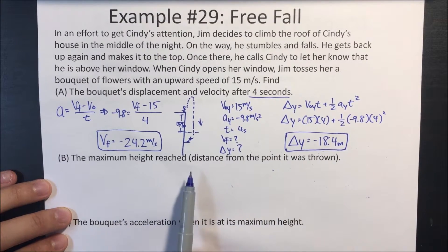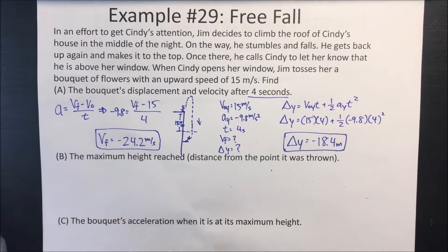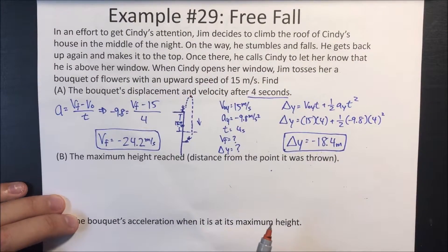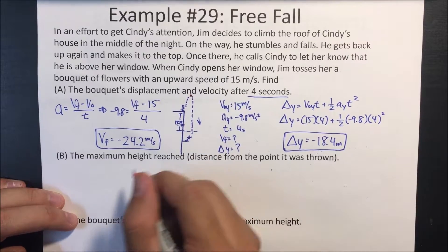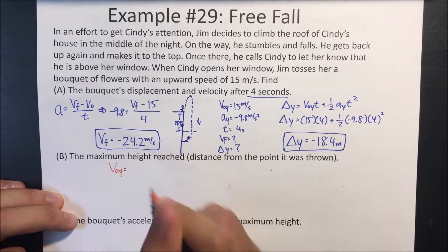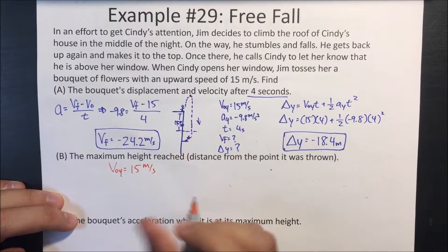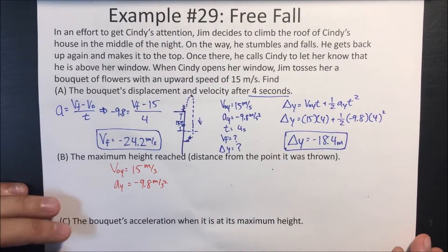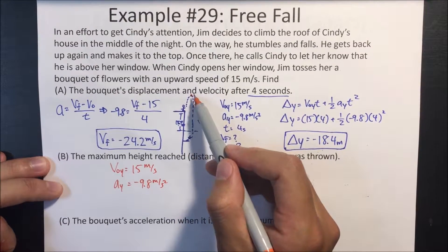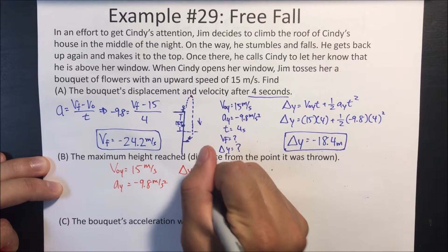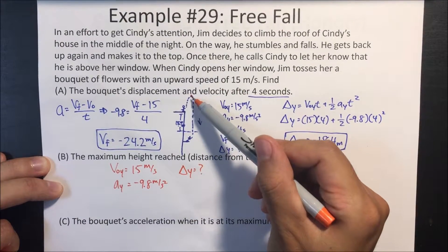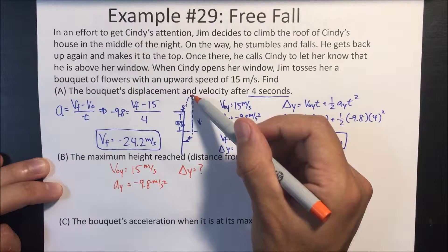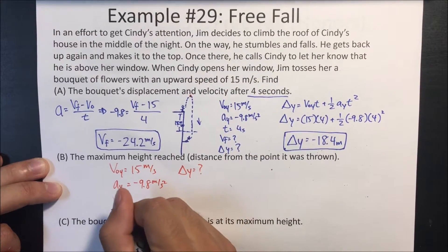What is the maximum height reached from the point it was thrown? We're looking for the highest point that it achieves. We know when it was thrown it has an initial velocity of 15 meters per second, gravity gives negative 9.8 meters per second squared. We should also know that at the top of its trajectory, the velocity is zero, so final velocity equals zero.